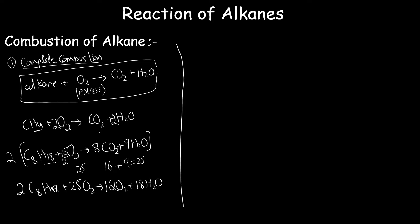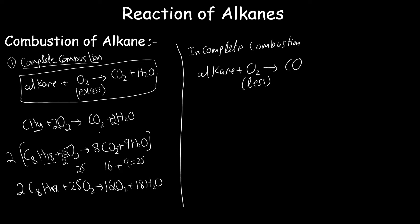Now the second type of combustion: incomplete combustion. In incomplete combustion, alkanes react with oxygen under limited or less supply of oxygen. Your products are carbon monoxide and water — these are the combustion products for incomplete combustion. We have two types: complete and incomplete.